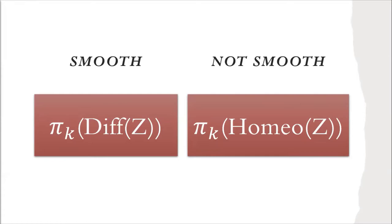Today I'm going to talk about an aspect of the large difference between the smooth and topological world in four dimensions. We see, for instance, that smooth concordance is very different than topological concordance. Some main players will be the homotopy groups of the diffeomorphism group versus the homotopy groups of the homeomorphism group for a smooth four-manifold.